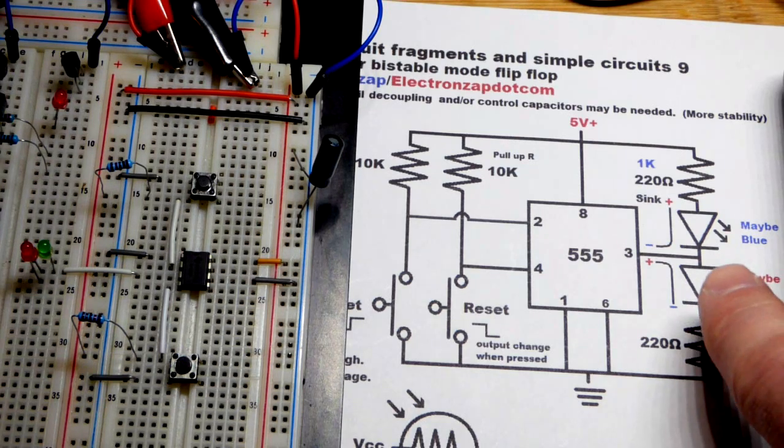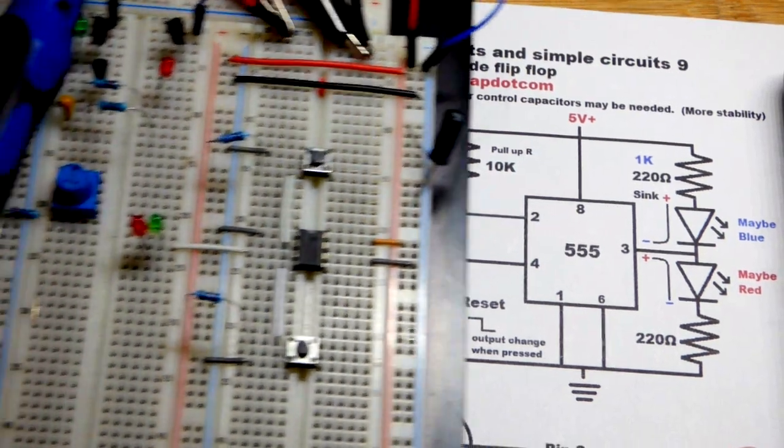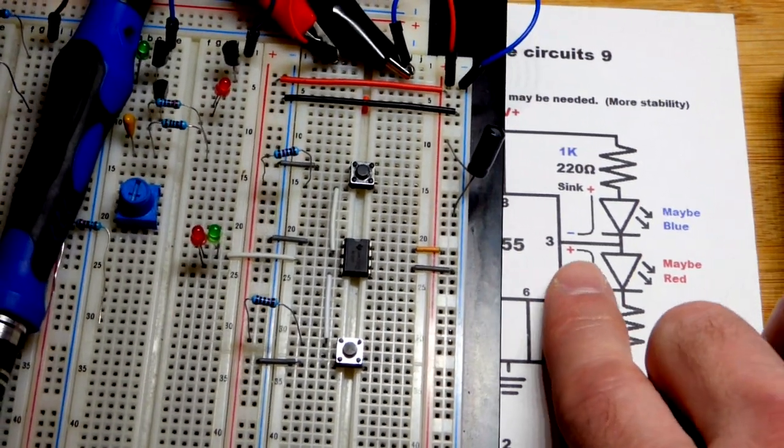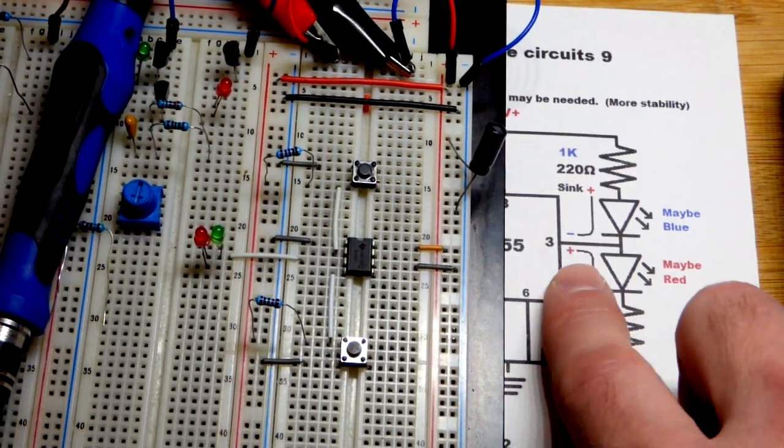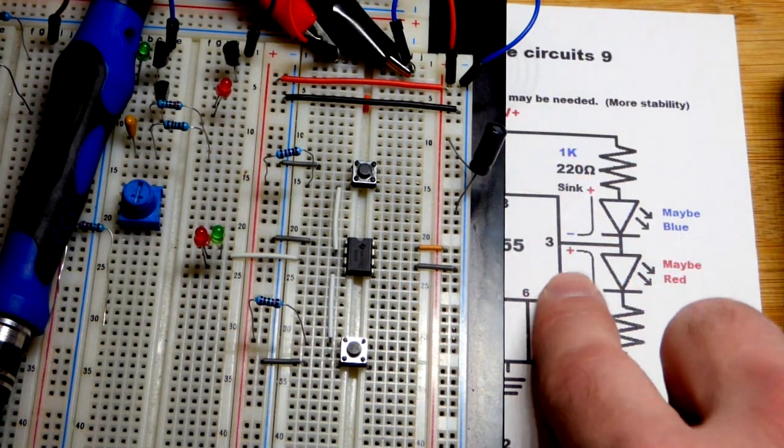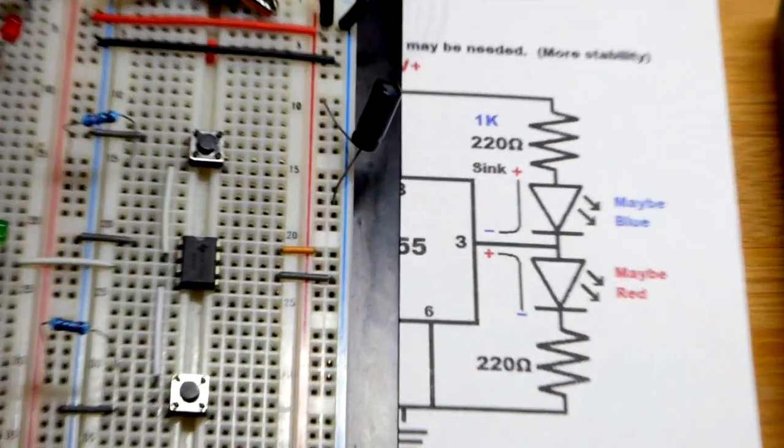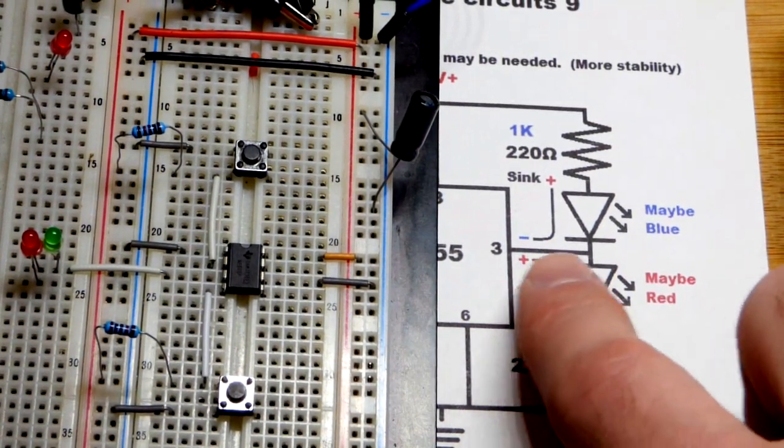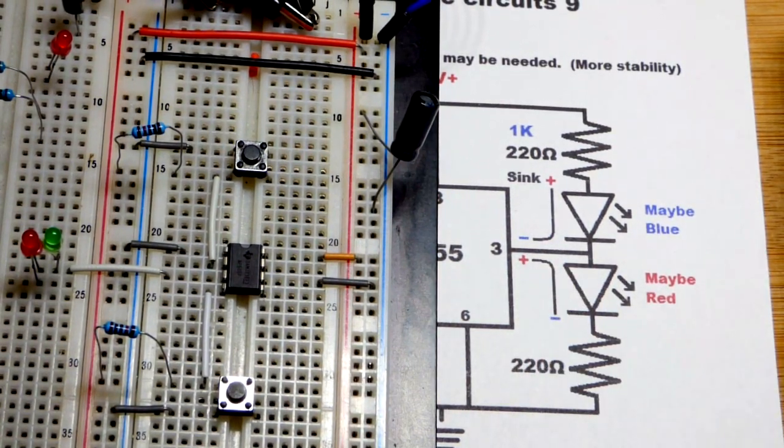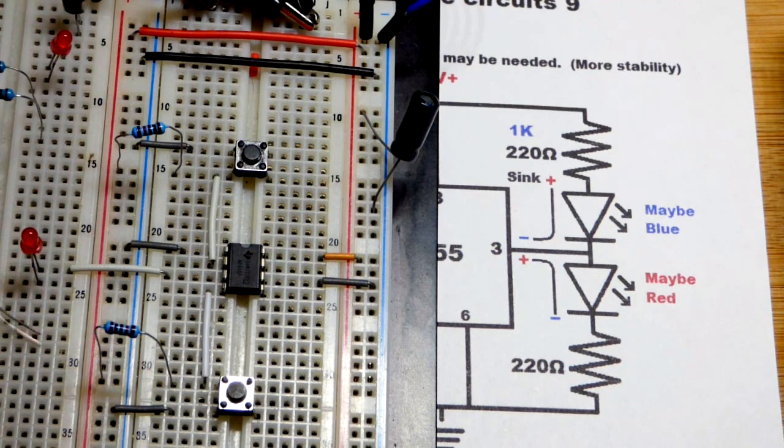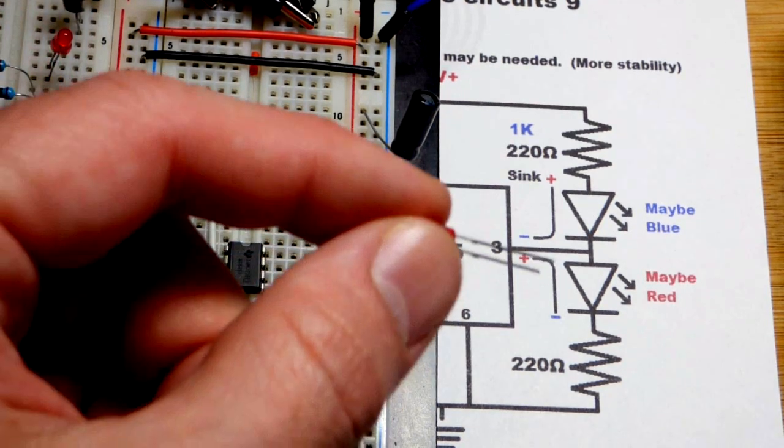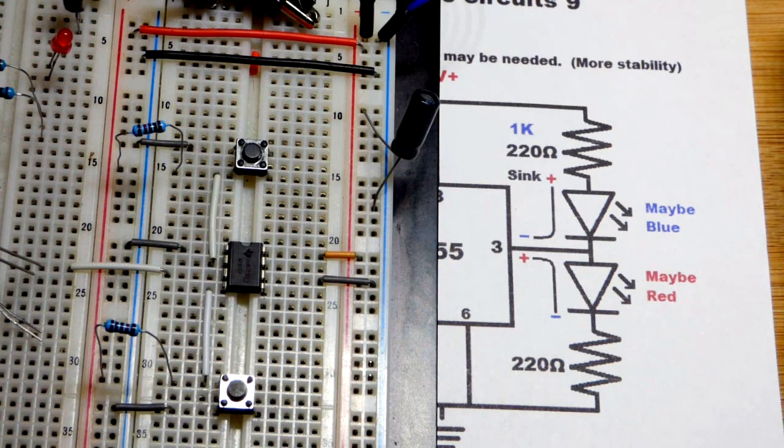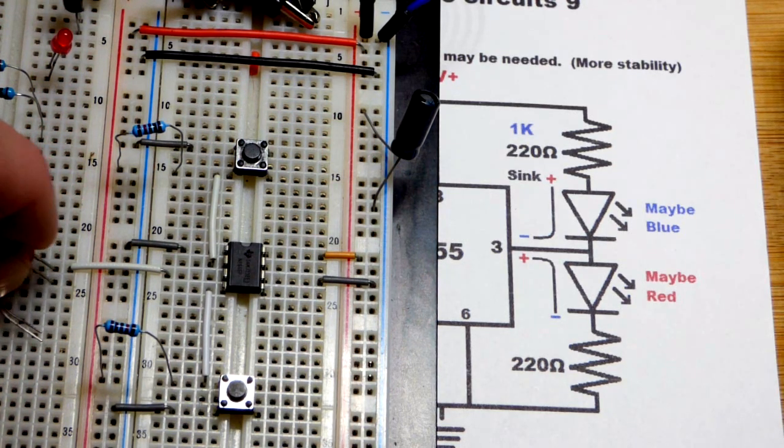Now we have a couple LEDs right here. So we'll zoom in over to this. The output basically either connects directly to the negative rail or pretty close to the positive rail. But to make things simple we'll just say it connects directly to the positive rail. And some 555 timers do a better job connecting directly to the positive rail. So the red LED, we're going to put the long LED anode to the output because we want that to light up when the output is high.